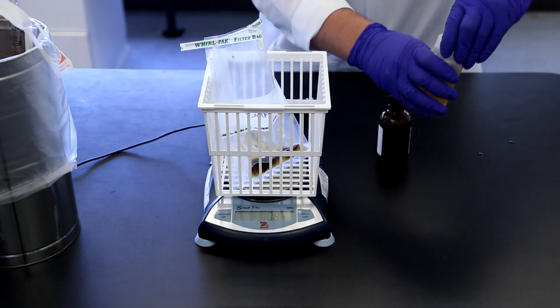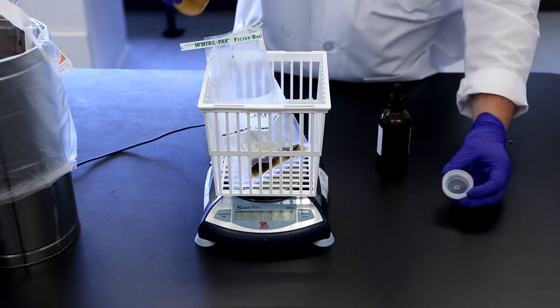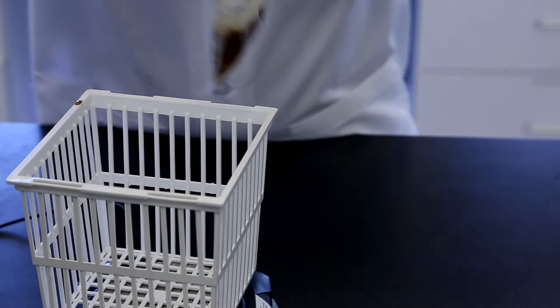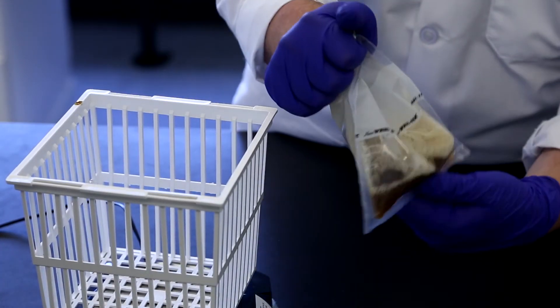Next, pour 90 milliliters of TSB or neutralizing broth into the sample vessel and homogenize, by manual or mechanical means, to create a 1 to 10 sample dilution.